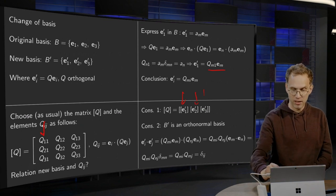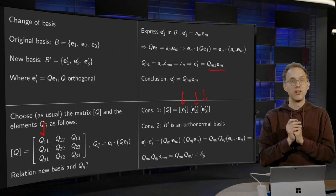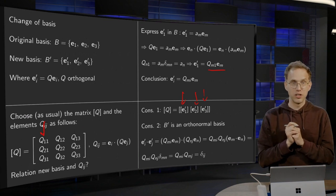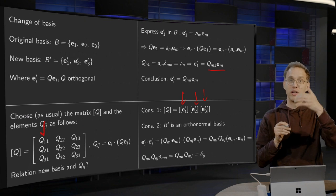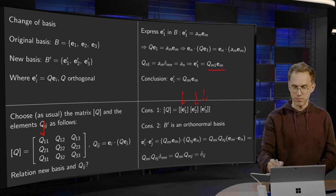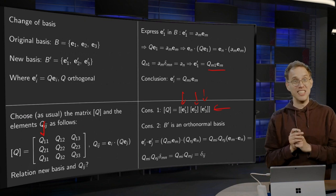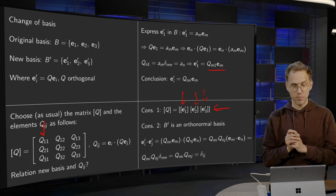So the matrix of your transformation Q gives you your new basis vectors as columns in the old basis. That's the first consequence. So that's also an easy way to find your matrix Q, by the way.